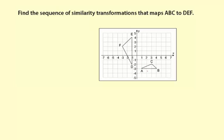I'm going to see if I can figure out what the scale factor has to be. AB is 3, and then DE is 6. So the dilation is 2.